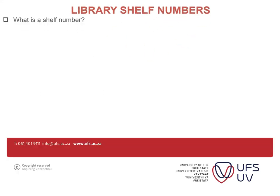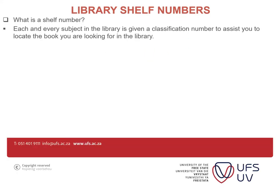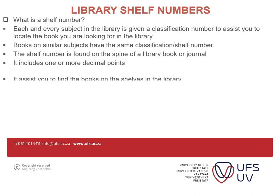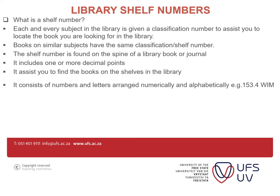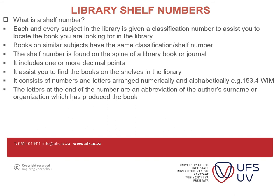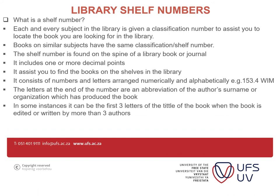On this slide, I'm going to talk about shelf numbers. Each and every subject in the library is given a classification number to assist you in locating the books you are looking for. Books on similar subjects have the same classification or shelf number. The shelf number is found on the spine of a library book or journal. It includes one or more decimal points, and it assists you to find books on the shelves. It consists of numbers and letters arranged numerically and alphabetically.